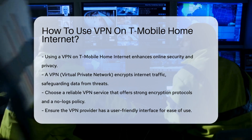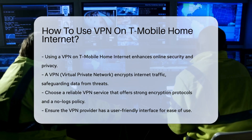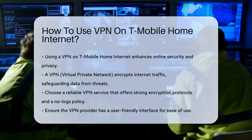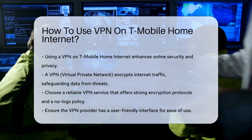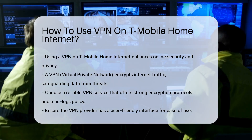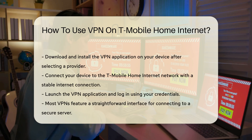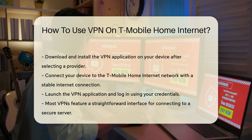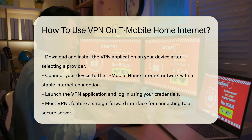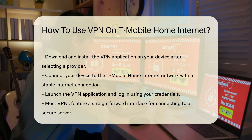To begin, you must choose a reliable VPN service. Look for a provider that offers strong encryption protocols, a no-logs policy, and a user-friendly interface. After selecting a VPN, download and install the application on your device. Next, connect your device to the T-Mobile Home Internet network. Ensure your internet connection is stable before proceeding.